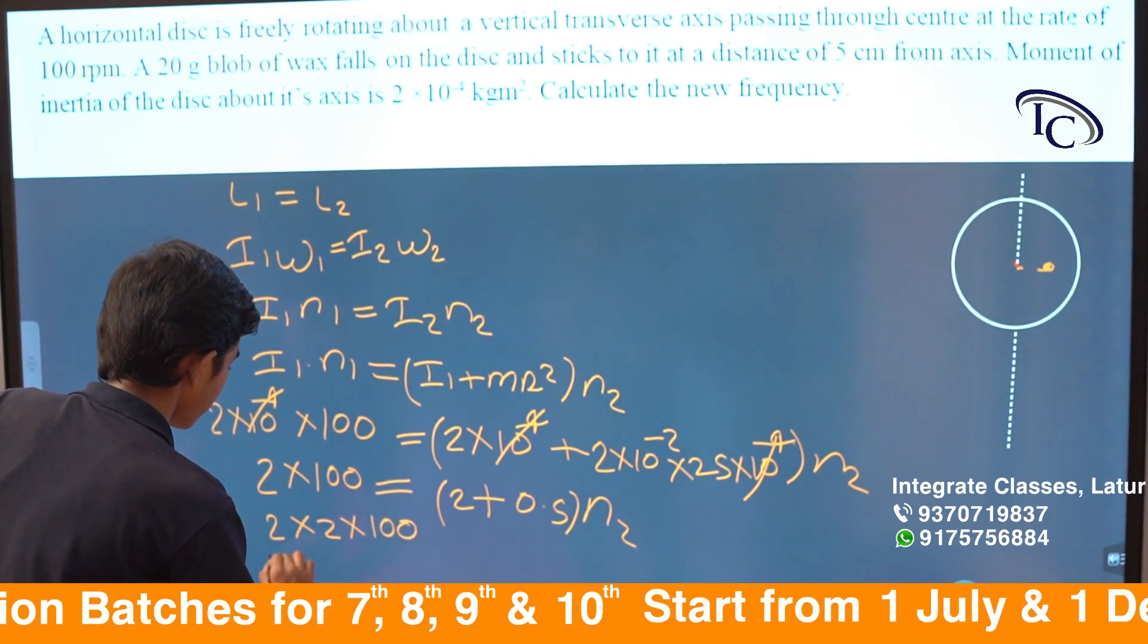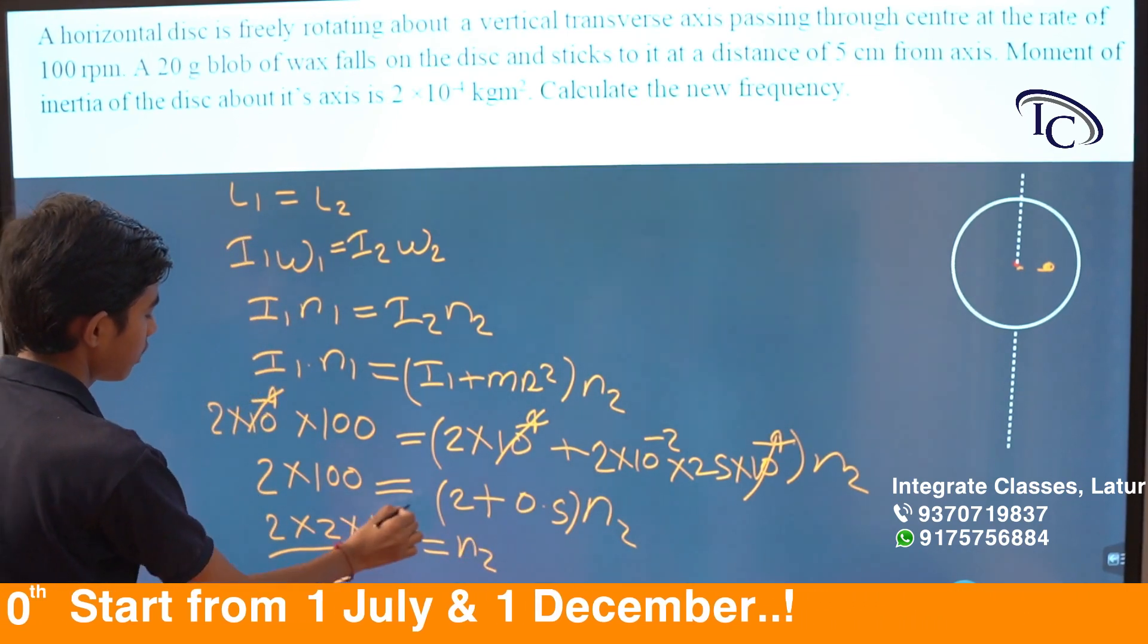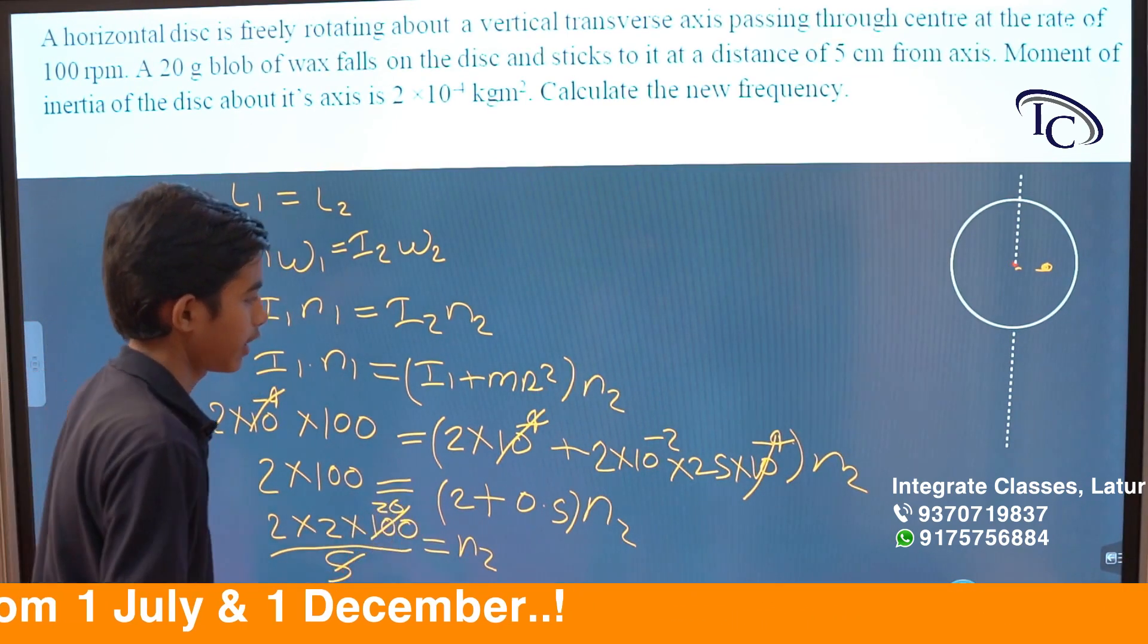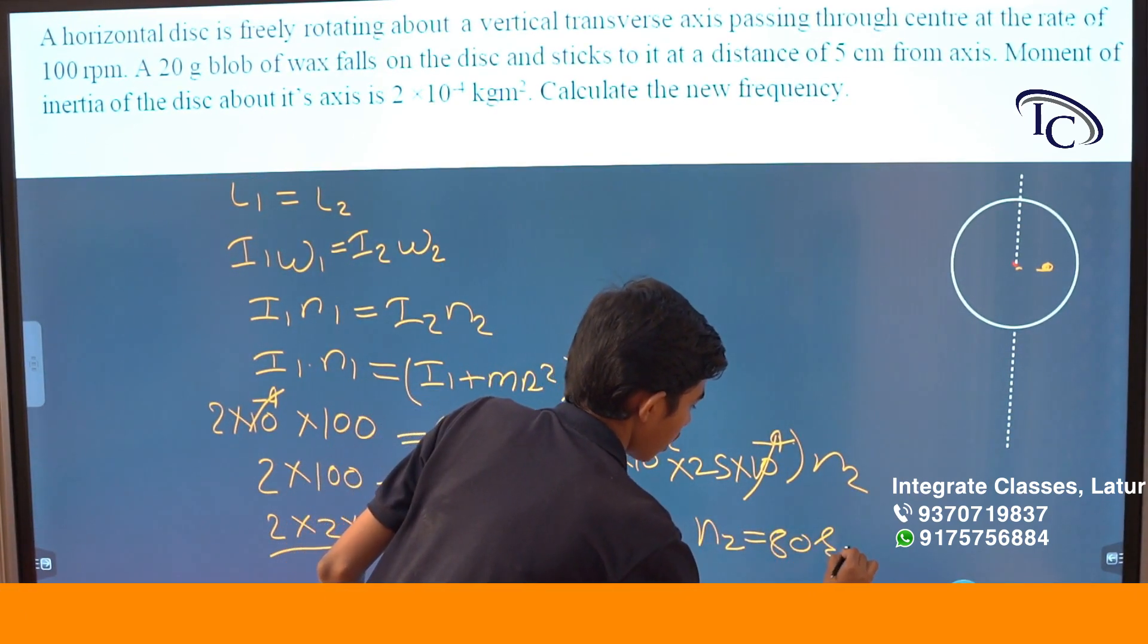Divided by 5 equals... The answer is equal to 80 rpm.